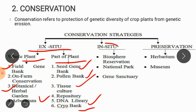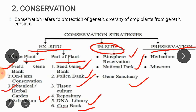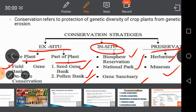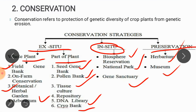In-situ conservation means on-site — conserving material in their natural habitat. For example, we maintain biospheres, national parks, and gene sanctuaries where we can maintain that material as it is. The third way is preservation in the form of herbarium or museum.